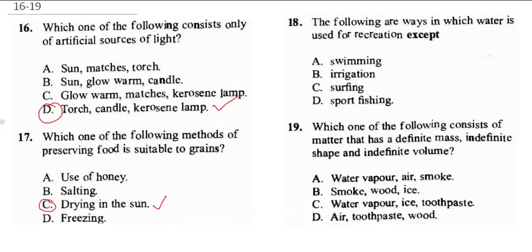Question 18 asks about ways water is used for recreation, with one exception. Swimming is a recreational activity using water. Irrigation is for farming, so it is not recreational — it is an agricultural activity. Surfing and sport fishing are also recreational water activities. So the correct answer is irrigation, which is excluded because it is a farming activity.